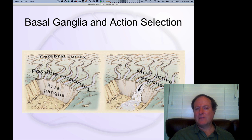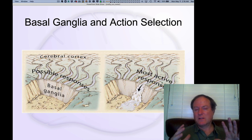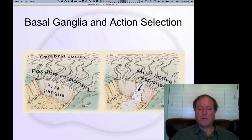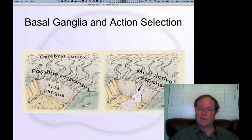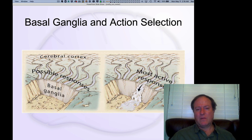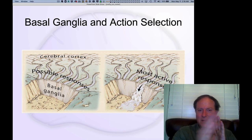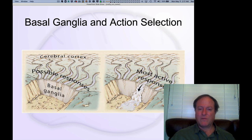It says 'the most active,' but in our framework it's really the most rewarding response — the one most likely to lead to a good reward, or at least not a negative outcome, is the one that gets selected. Once selected, that particular channel is opened up. Another way of thinking about it is a train track selector: you're picking which one gets to go through, complete the circuit, and actually perform the action.